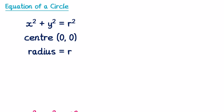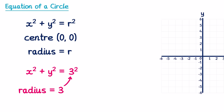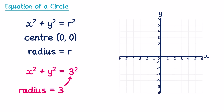For example, if we had x² + y² = 3², this would be a circle where the centre is at the origin and the number 3 tells us the radius is equal to three. To draw a graph of this, we take some axes and draw a circle with radius 3 and centre at the origin, something that looks like this.